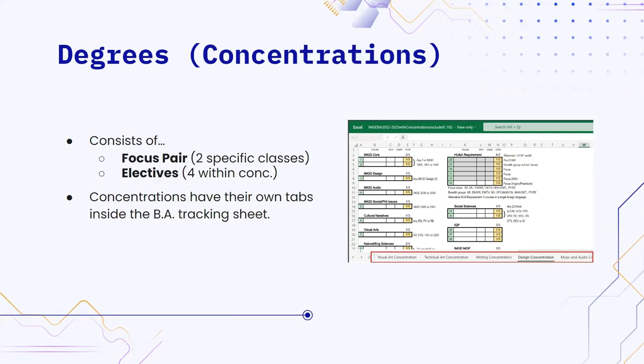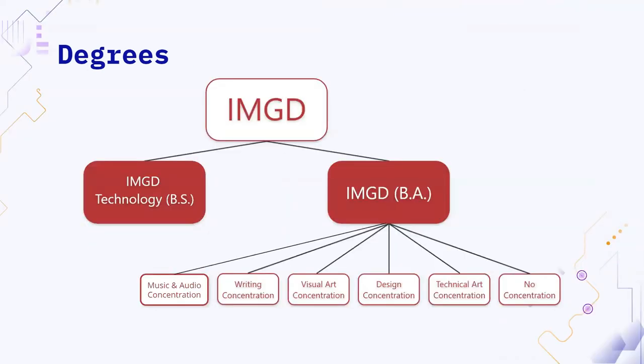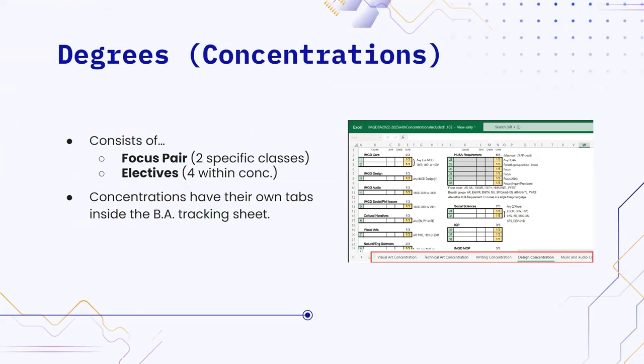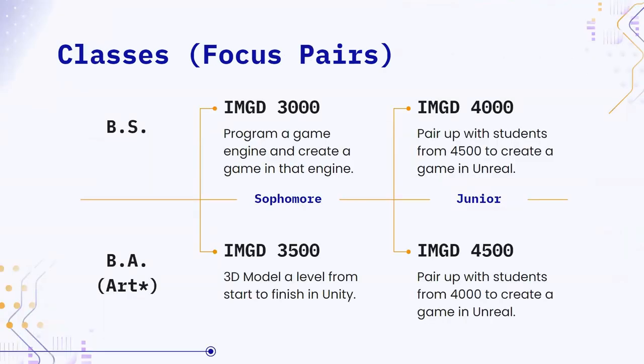Let's talk about concentrations. Degrees break down into Bachelor of Science and Bachelor of Arts, but concentrations are a little more niche. They are essentially additional criteria on top of your Bachelor of Arts degree that force you to take certain focus pairs and electives. Each of the concentrations has a focus pair — two specific classes — and each concentration also requires you to take four electives fitting within that concentration. Each concentration in Bachelor of Arts has its own tab in the BA tracking sheet.